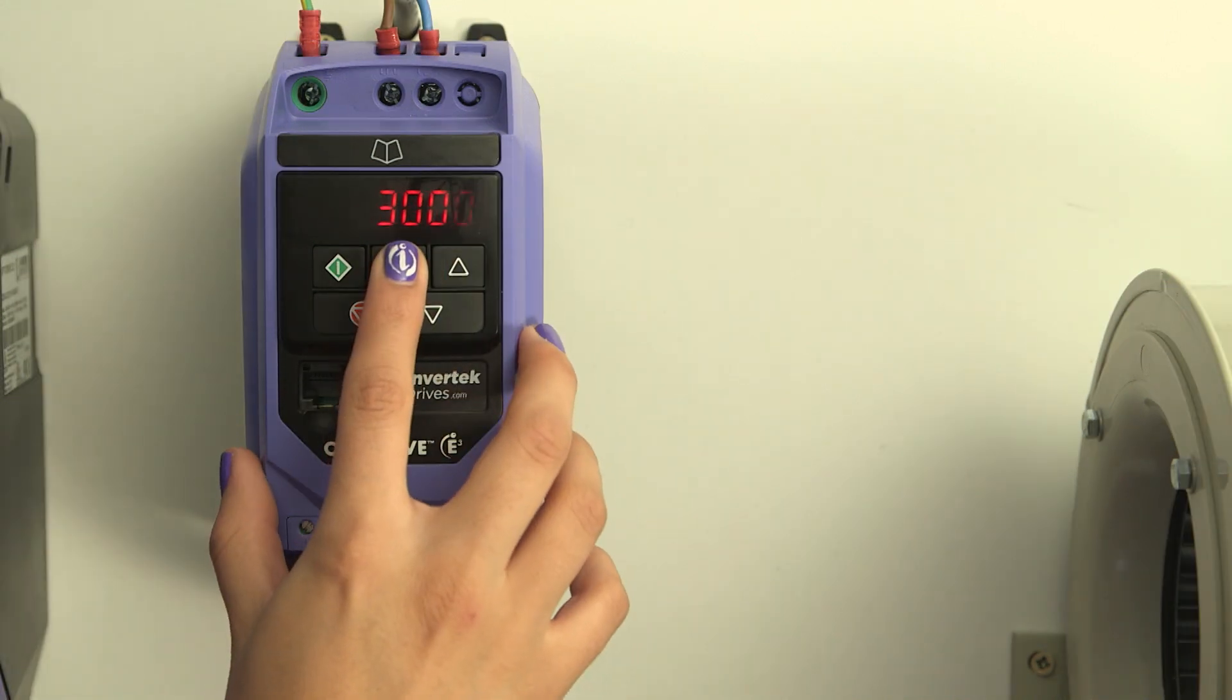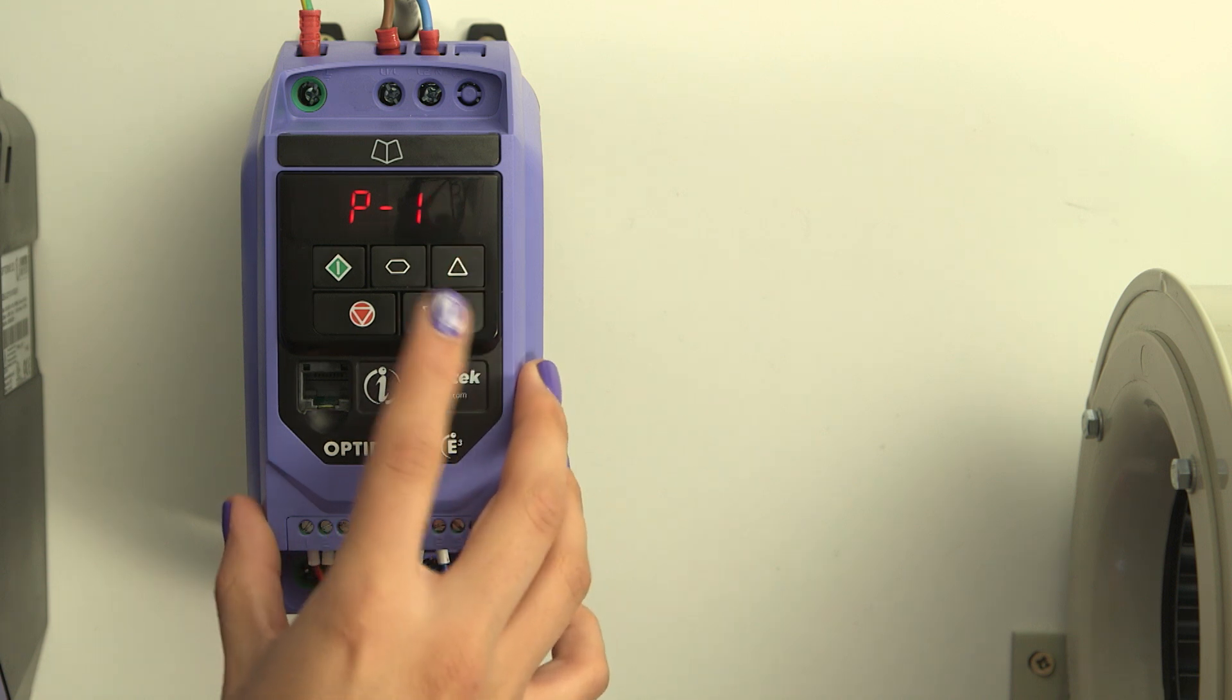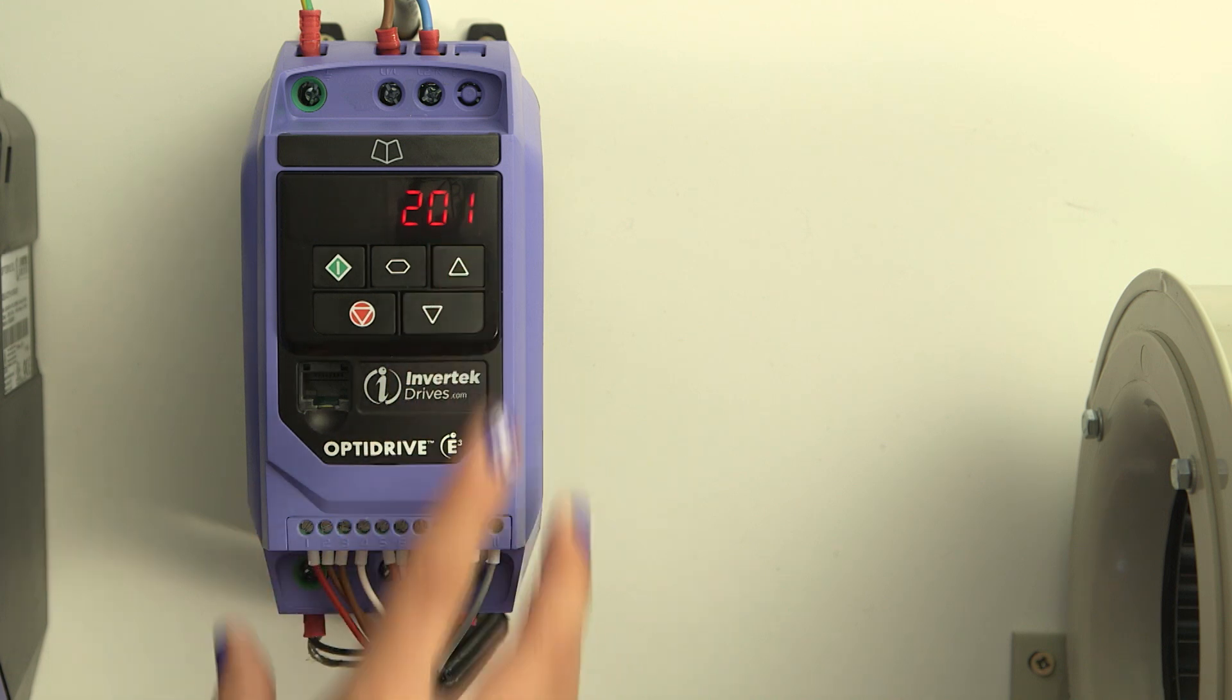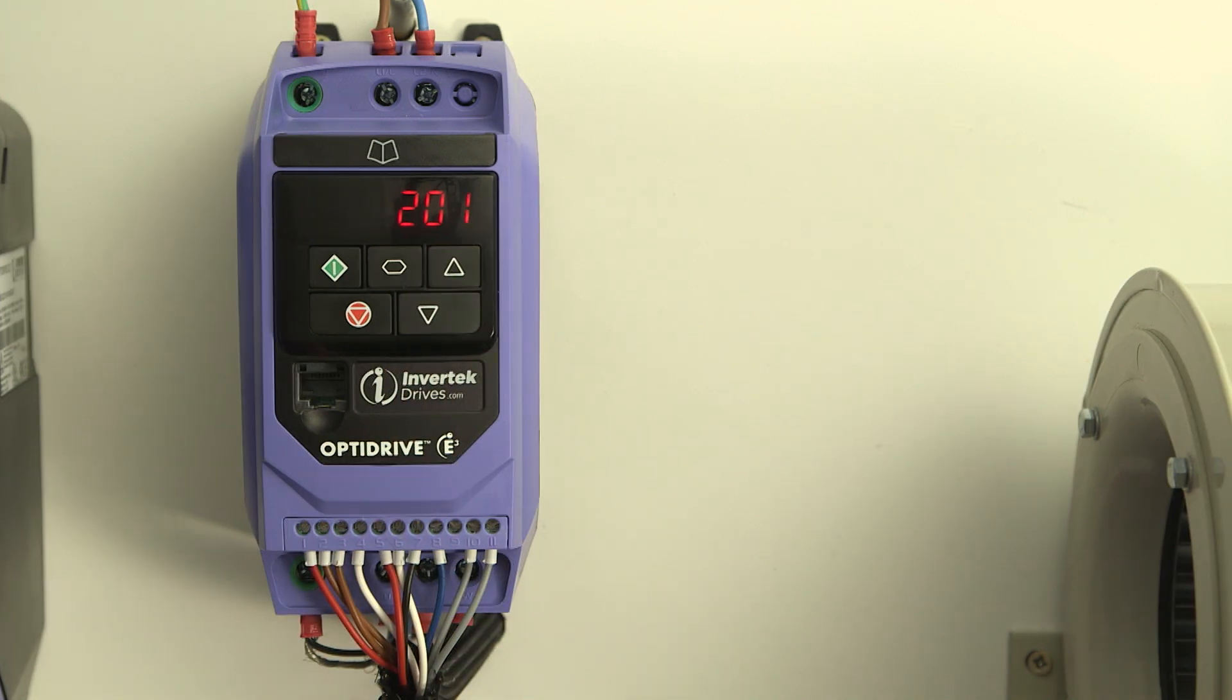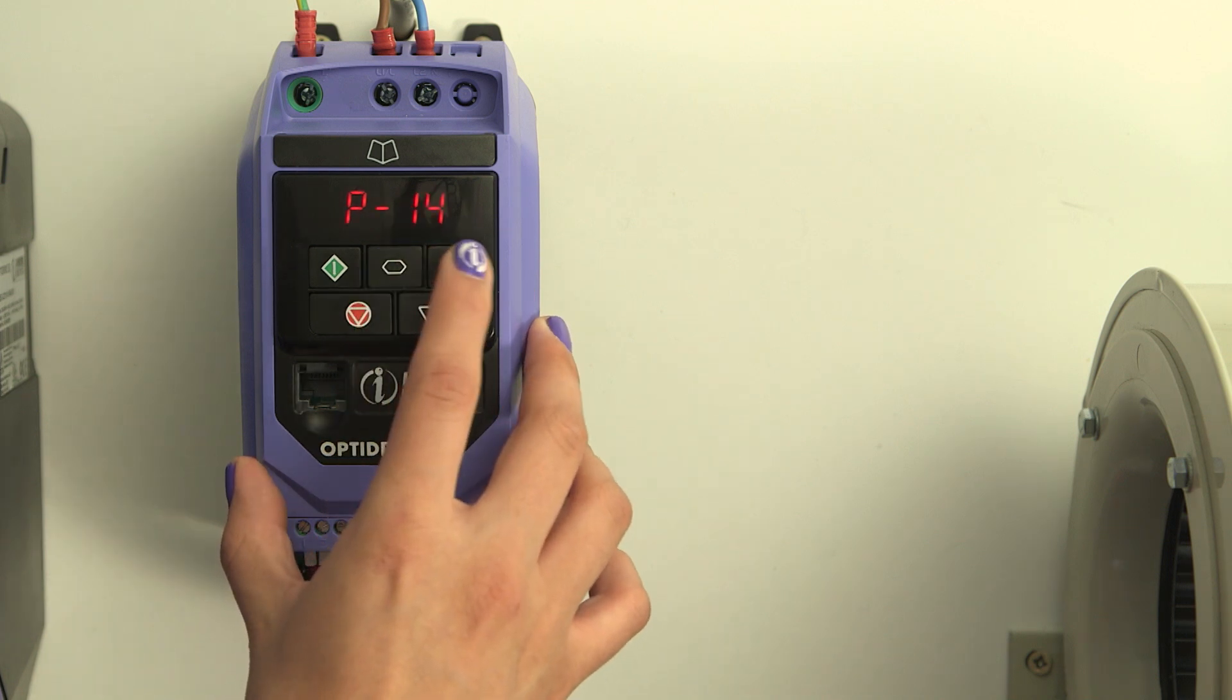To access all the other parameters, we will need to set parameter 14 to 201 to access the extended parameter set. It is recommended to use a switching frequency of 16 kHz for these motors, so we'll just check that in parameter 17.